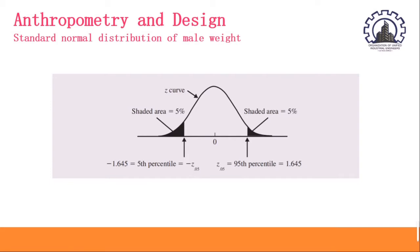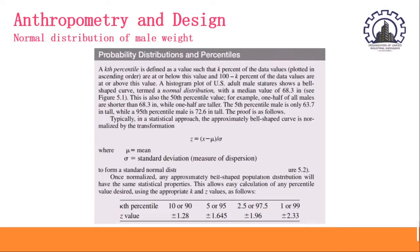Shown is a standard normal distribution of male weight, where the 5th percentile, or the negative Z-score, is at the left side, and the positive Z-score, or the 95th percentile, is at the right side. Z-score, or standard curve, technically measures how many standard deviations below or above the population mean a raw score is.